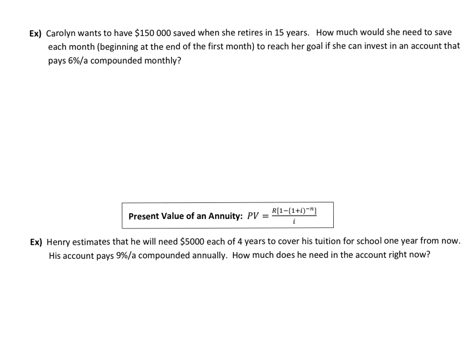Alright, Carolyn wants to have $150,000 saved when she retires in 15 years. How much would she need to save each month beginning at the end of the first month, so that makes it the ordinary simple annuity.